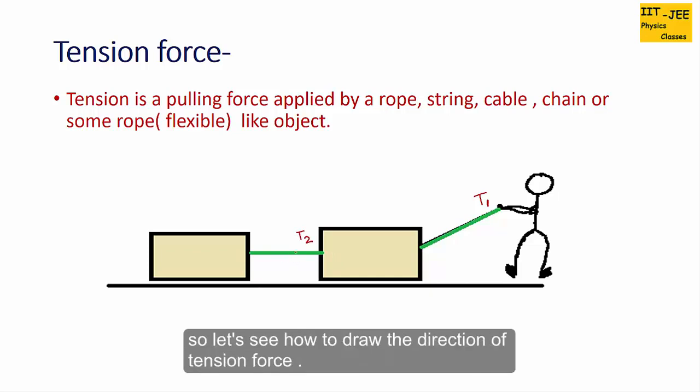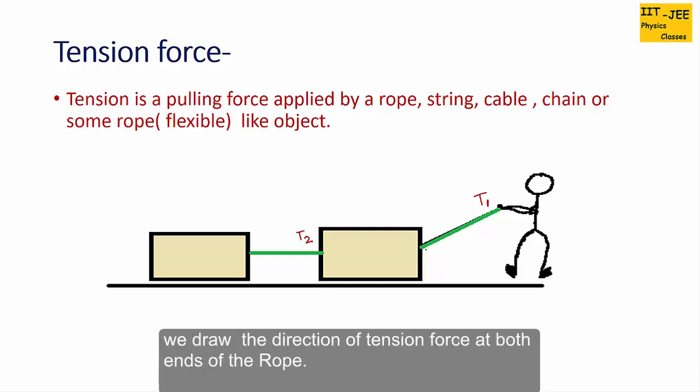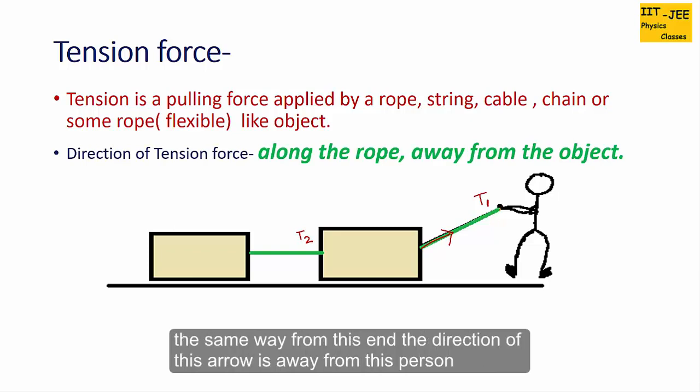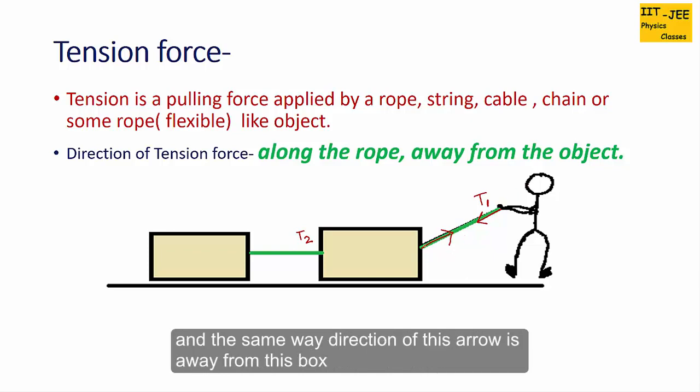Let's see how to draw the direction of tension force. We draw the direction at both ends of the rope. From this end we draw along the rope and moving away from the object. From this end the direction is away from the person, and the direction of this arrow is away from the box.